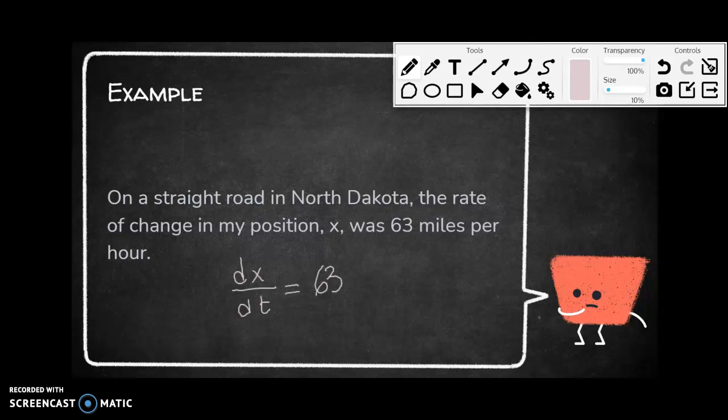That straight road in North Dakota is very boring — I just have my cruise control set to 63 and ride with it.